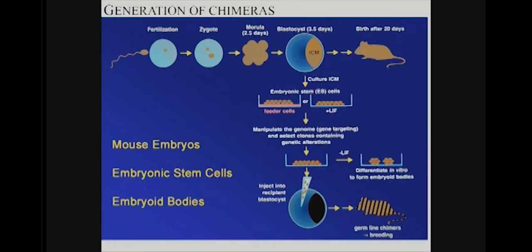This chimera generation strategy basically recapitulates what we've been talking about. To create the cells you're going to inject into the recipient blastocyst, those might come from an inner cell mass cultured in the laboratory. For a while, people thought — particularly for human ES cells — that you had to grow them on mouse embryonic fibroblasts, which turned out to be important but created all kinds of safety issues, such as cross-species contamination.